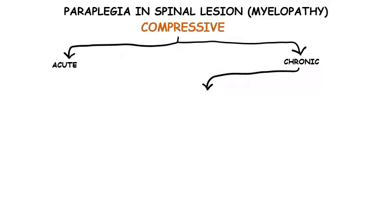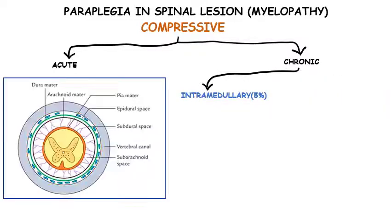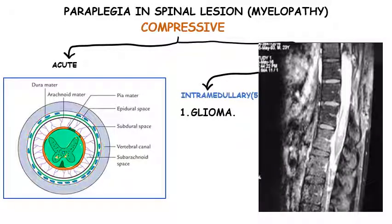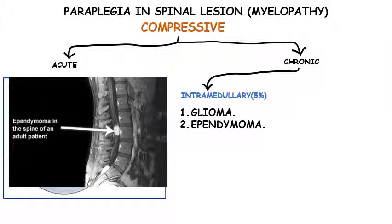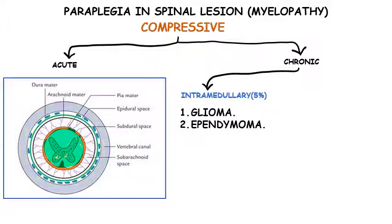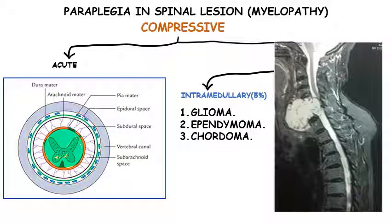The causes of compressive myelopathy can be considered as intramedullary and extramedullary based on the location of the lesion. Intramedullary lesions occur within the substance of the spinal cord and comprise 5% of all compressive myelopathy. They include glioma, a type of tumour that starts in the neuroglial cells of the brain or spine; ependymoma, arising from ependymal cells, which are involved in the production of cerebrospinal fluid — usually intracranial in pediatric cases but spinal in adults; and chordoma, a rare slow-growing neoplasm thought to arise from cellular remnants of the notochord.